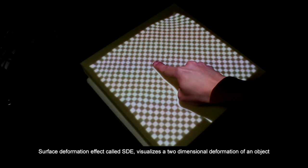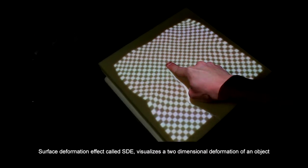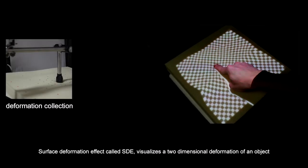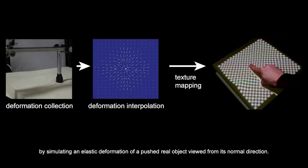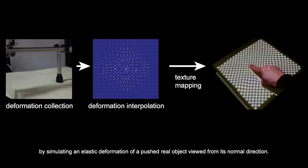Surface deformation effect, called SDE, visualizes a two-dimensional deformation of an object by simulating an elastic deformation of a pushed real object viewed from its normal direction.